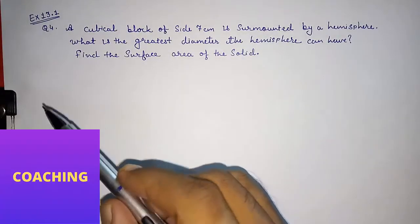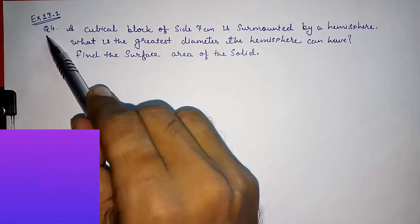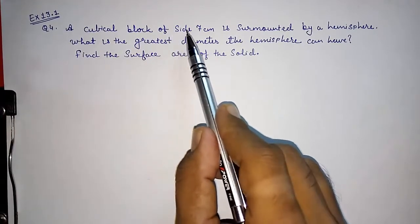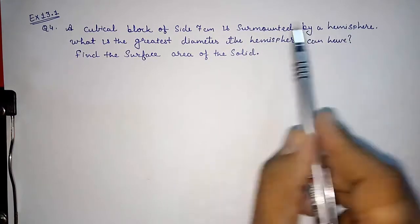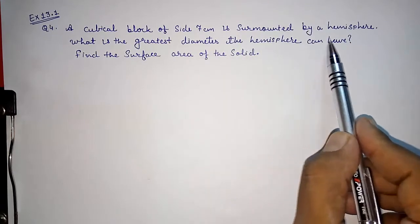Hello friends, today we are going to solve CBSE Class 10 Exercise 13.1, Question Number 4. A cubical block of side 7 centimeters is surmounted by a hemisphere. What is the greatest diameter the hemisphere can have?